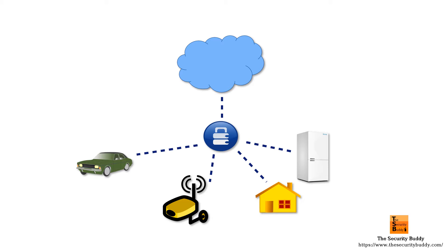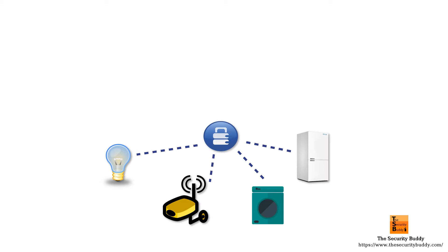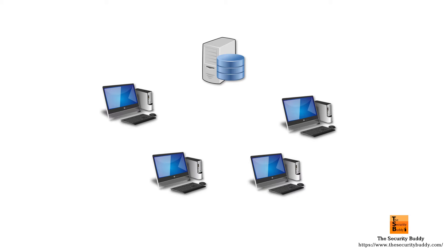A smart home, for example, uses an IoT system. The IoT system includes devices and appliances like lighting fixtures, thermostats, home security systems, cameras, and other home appliances. These devices can communicate over a network and they can be controlled via devices like smartphones or smart speakers.